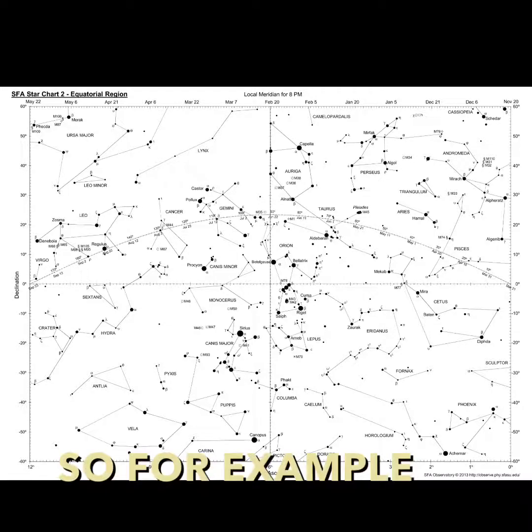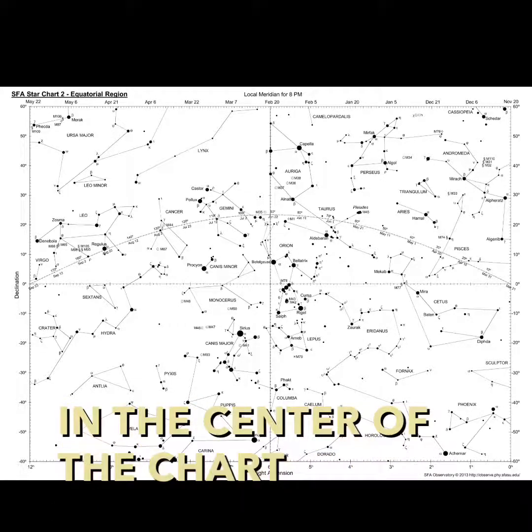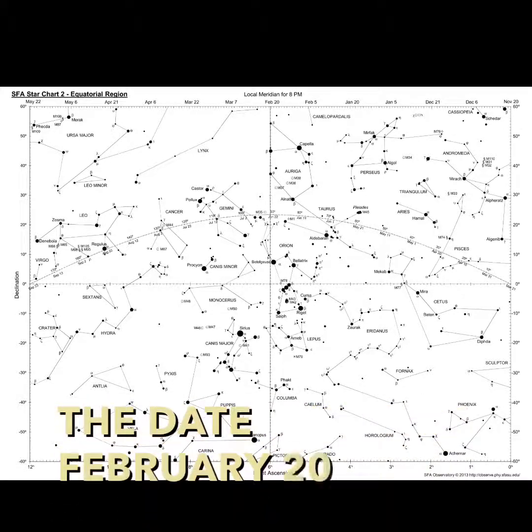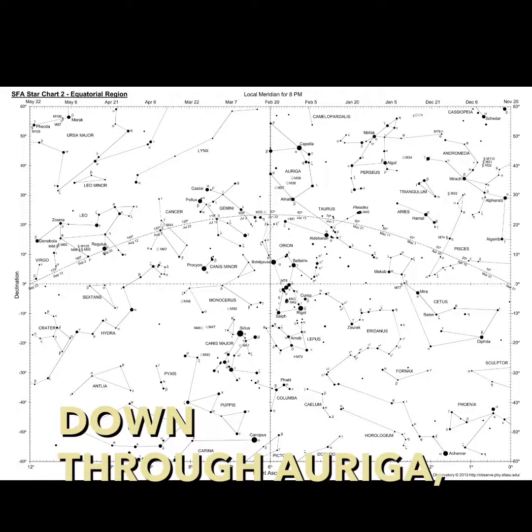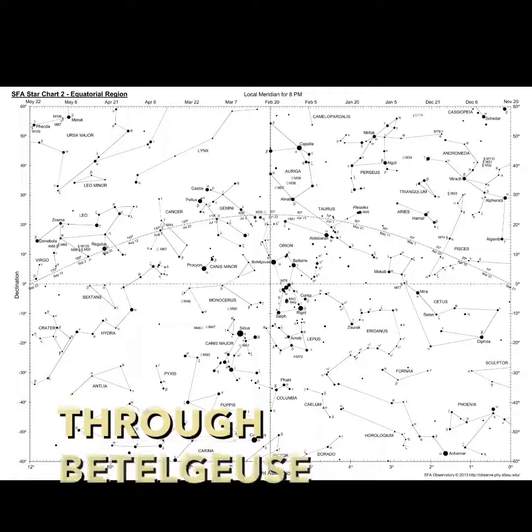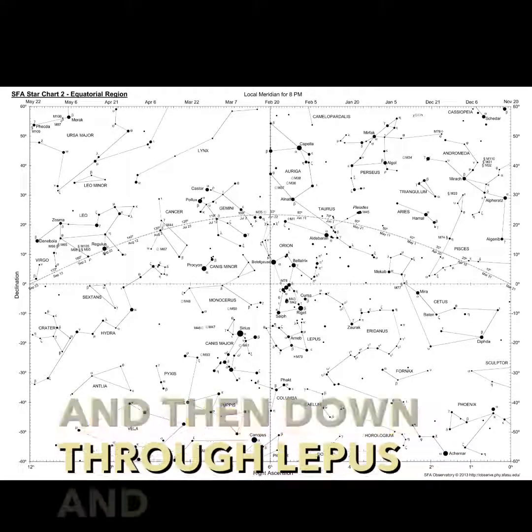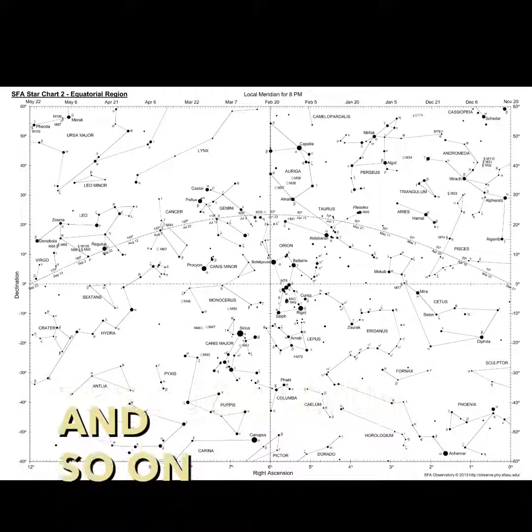So for example in the center of the chart you see the date February 20th and the line runs down through Auriga, Orion, just about through Betelgeuse and then down through Lepus and so on.